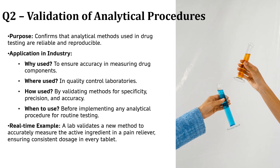This is done before any analytical procedure is officially used for routine testing in a pharma lab. Let's say a company develops a new painkiller — before mass production, they need to validate the method to measure the active ingredient in each tablet. This ensures every pill has the exact same dose, giving patients safe and effective treatment every time. Without ICH Q2, we wouldn't have any standard way to confirm drug quality.